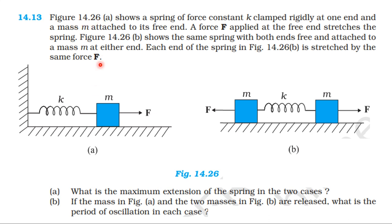Figure 14.26a shows a spring of force constant k clamped rigidly at one end and a mass m attached to its free end. A force F is applied at the free end and stretches the spring. Figure 14.26b shows the same spring with both ends free and attached to a mass m at either end. Each end of the spring is stretched by the same force F.